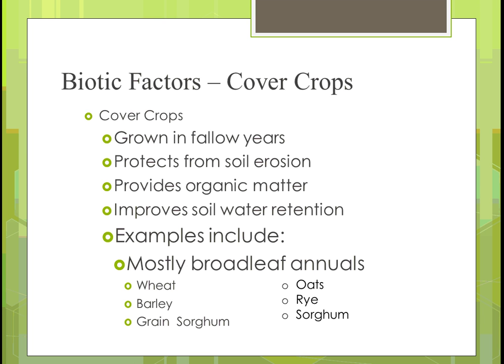Cover crops are grown in fallow years — one example is where you'd have a whole year where you wouldn't grow corn, soybeans, wheat, or alfalfa, and you put in the cover crop instead. It protects from soil erosion; in the past fields were just left fallow. We found that cover crops fix nitrogen, which helps, and they keep runoff from happening. They provide organic matter — you grow the cover crop then till it into the ground for added organics to the soil. It also improves soil water retention. Examples of cover crops include wheat, barley, sorghum, oats, and rye.